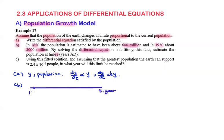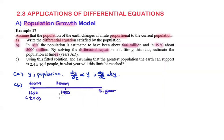In 1650, the population is about 600 million. In 1950, the population is about 3,000 million. We assume 1650 is the starting year, therefore t is equal to 0. 1950 minus 1650 is 300, so t equals 300 at 1950.